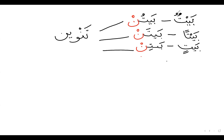Even though tanween is represented by doubling the sign — like the haraka: extra damma, extra fatha, extra kasra — in reality these words have a single damma, single fatha, and single kasra. The other damma is only representing the noon and sakina. This is what tanween truly is: a silent noon.